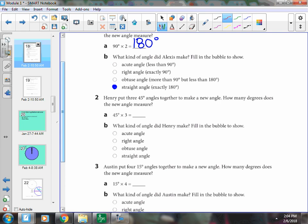45 plus 45 is 90, and then I could do 90 plus 45. Or you could do 45 times 3, or 45 plus 45 plus 45.